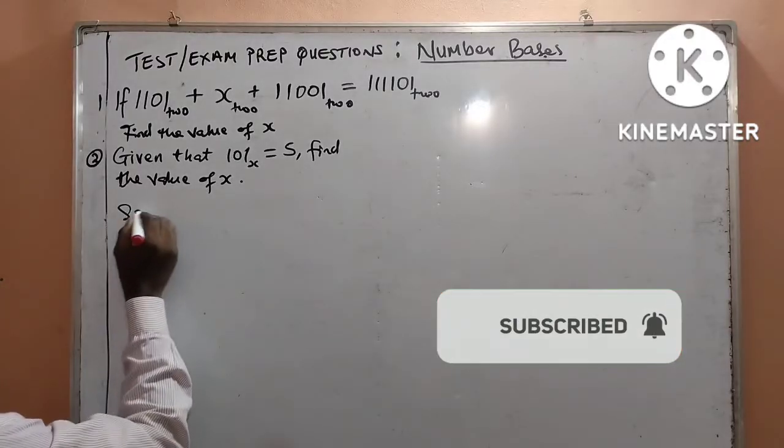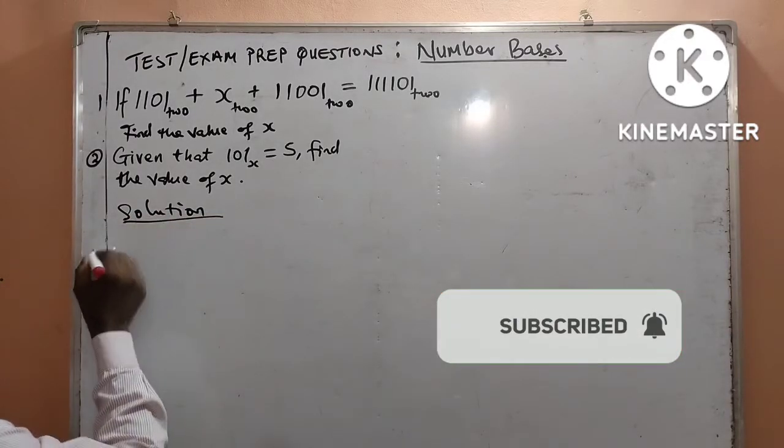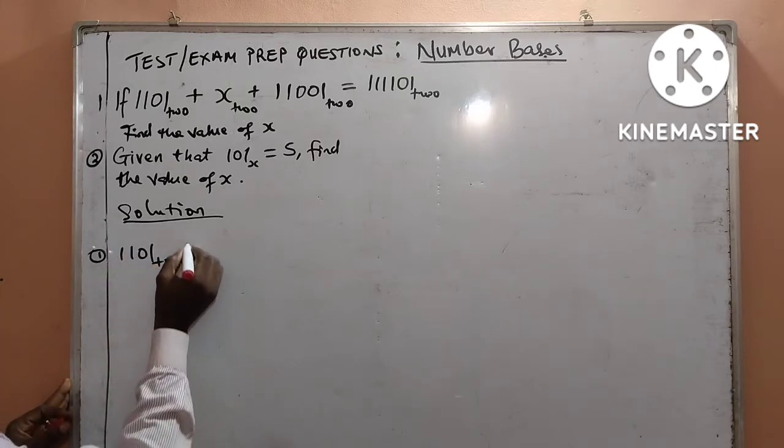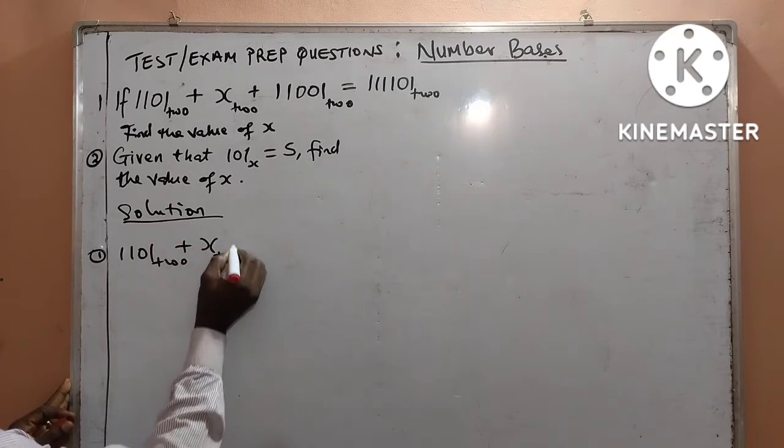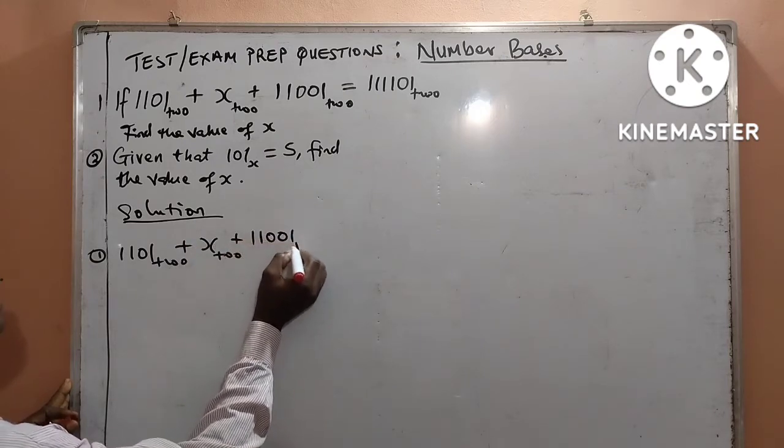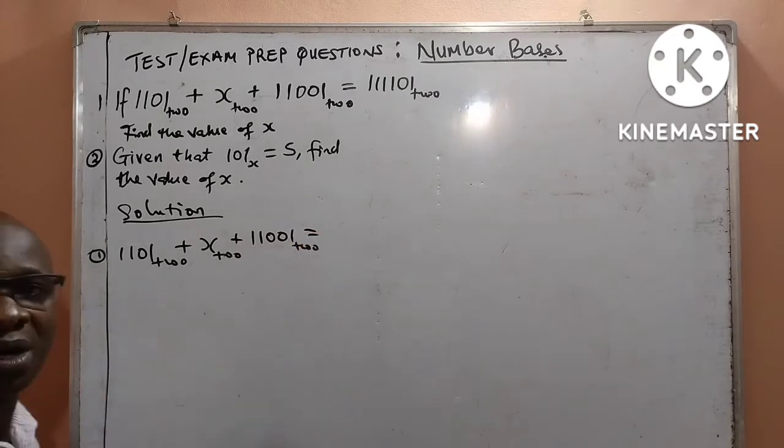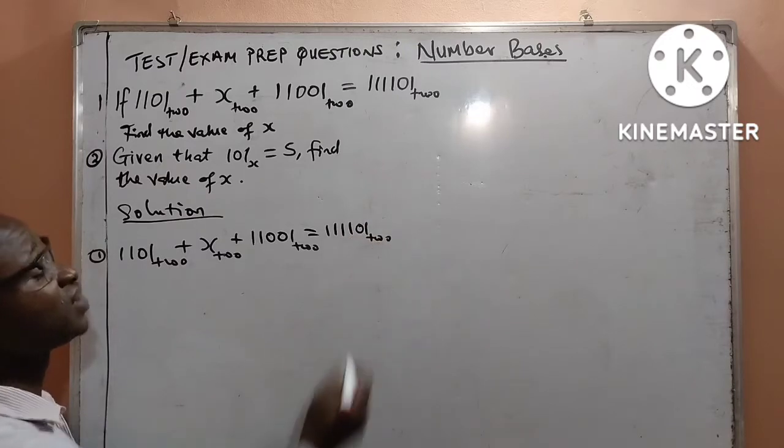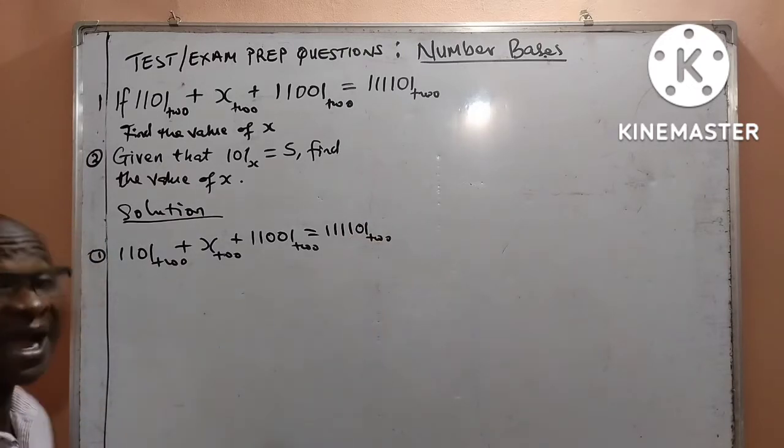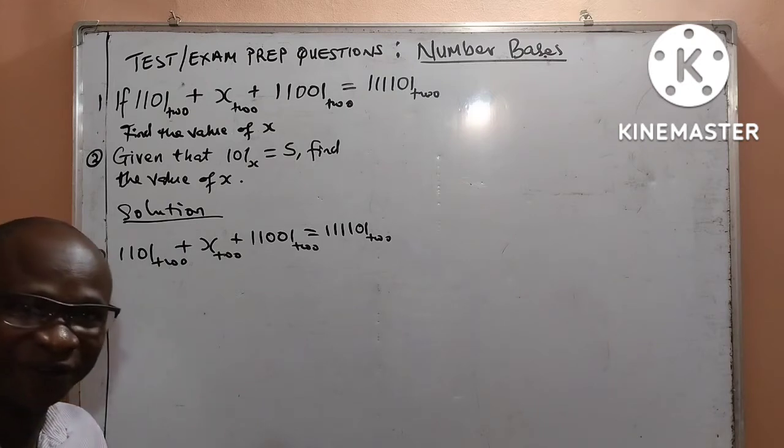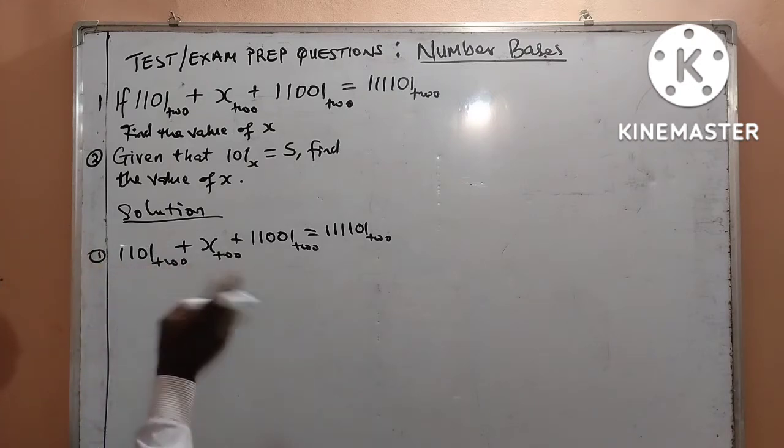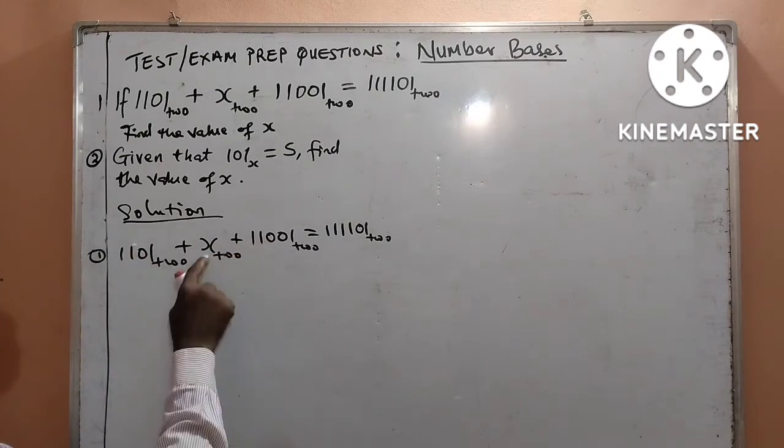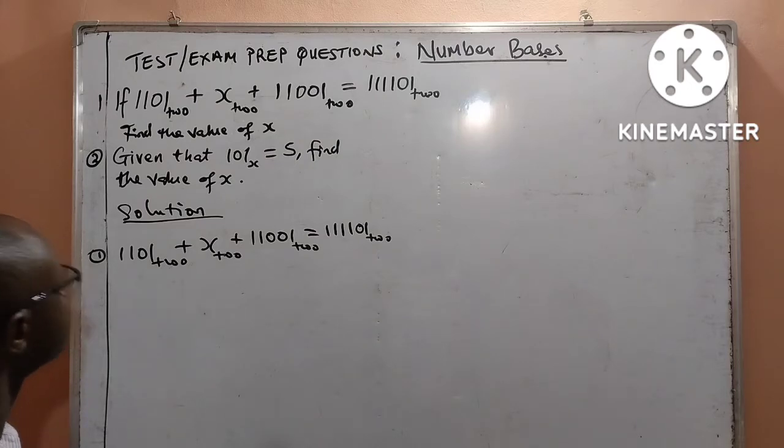From solution number 1, I have 1101 base 2 plus x base 2 plus 11001 base 2 equal to 111101 base 2. See, the first math we do, since all of them are in base 2. So life is beautiful here. Math is life. What I will do is to come to the left hand side and add these 2 that are already in base 2. Before, I will now know what is the value of x, also in base 2.